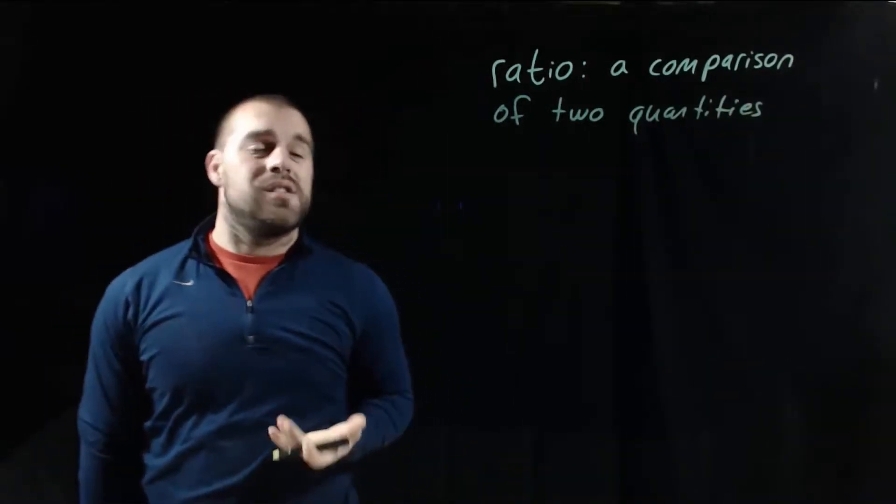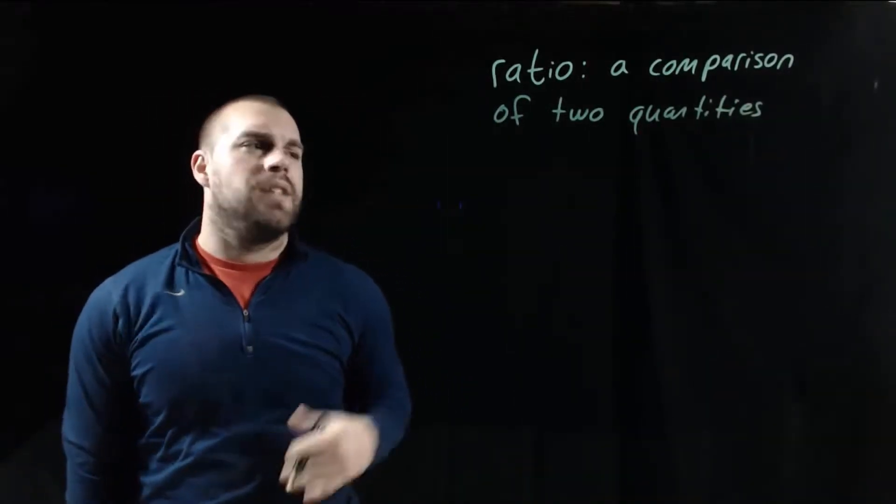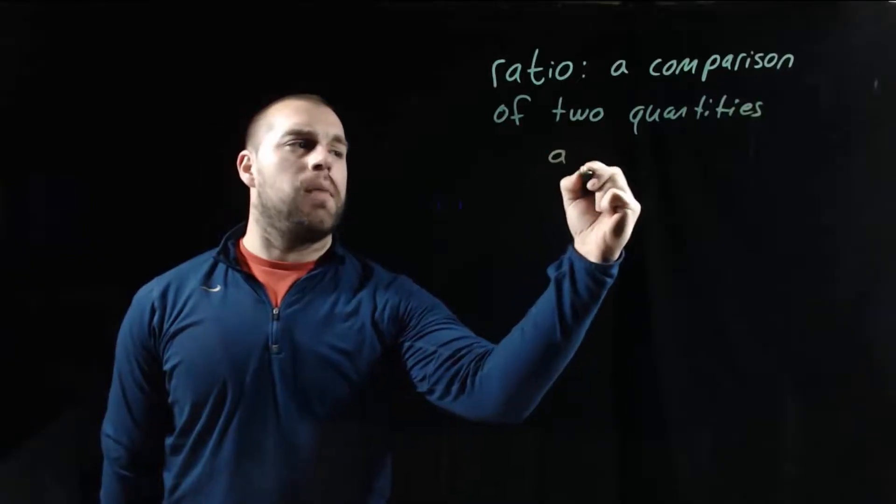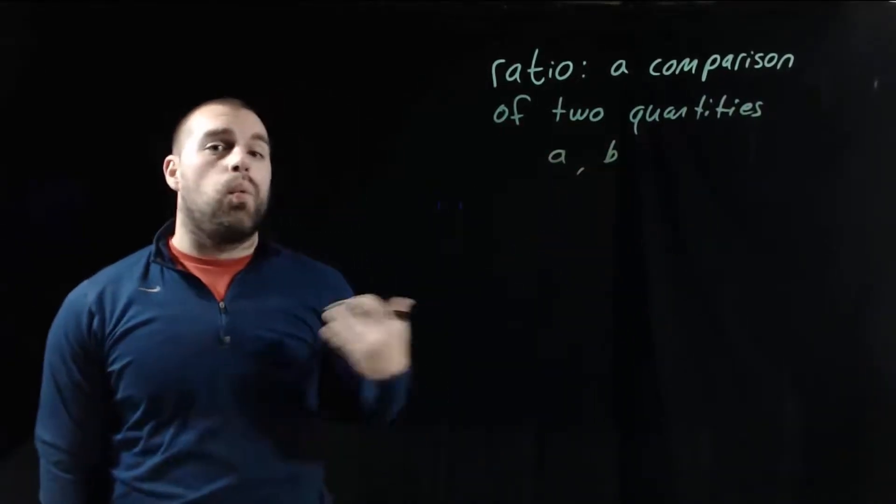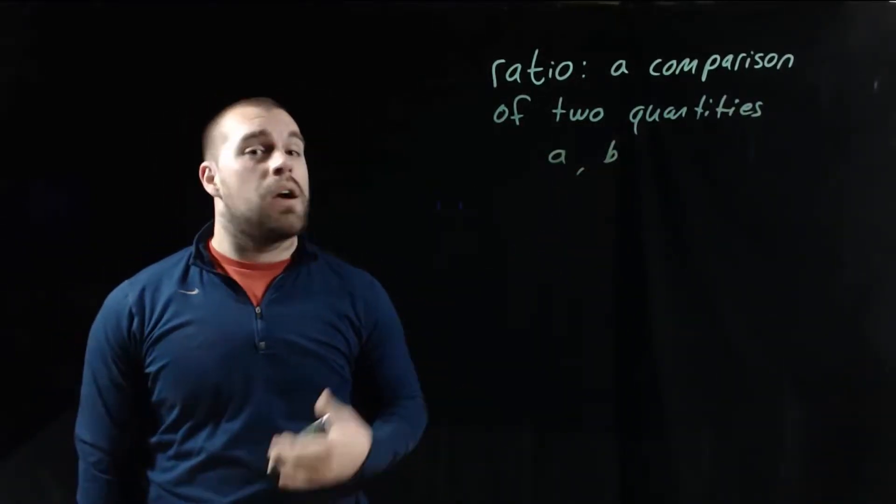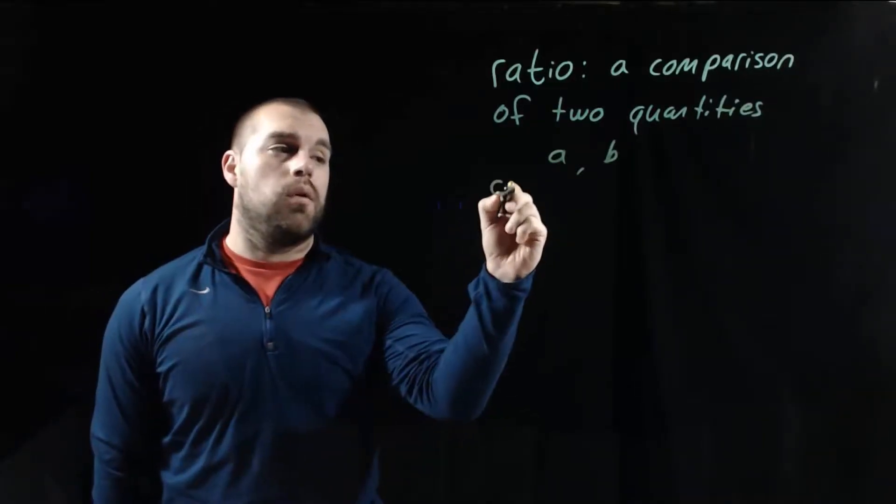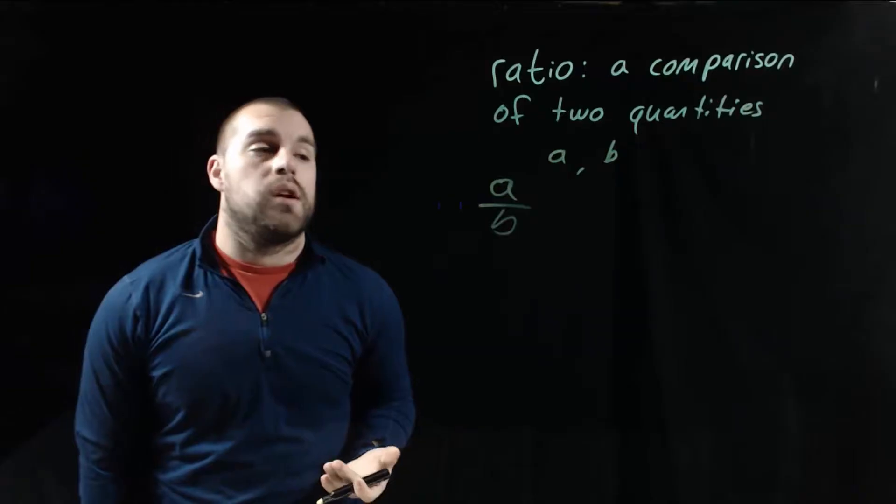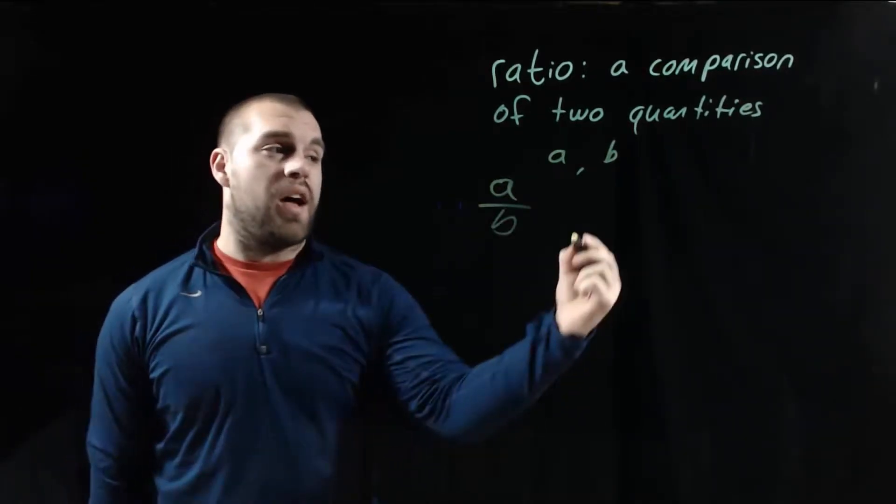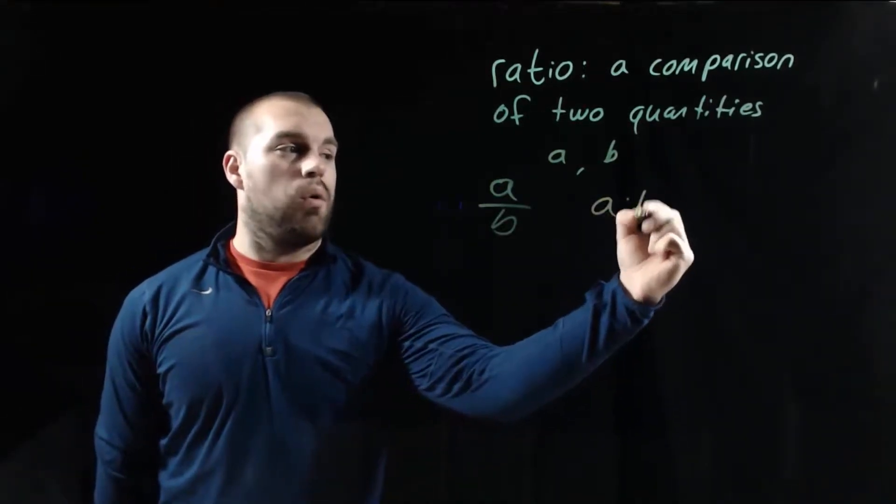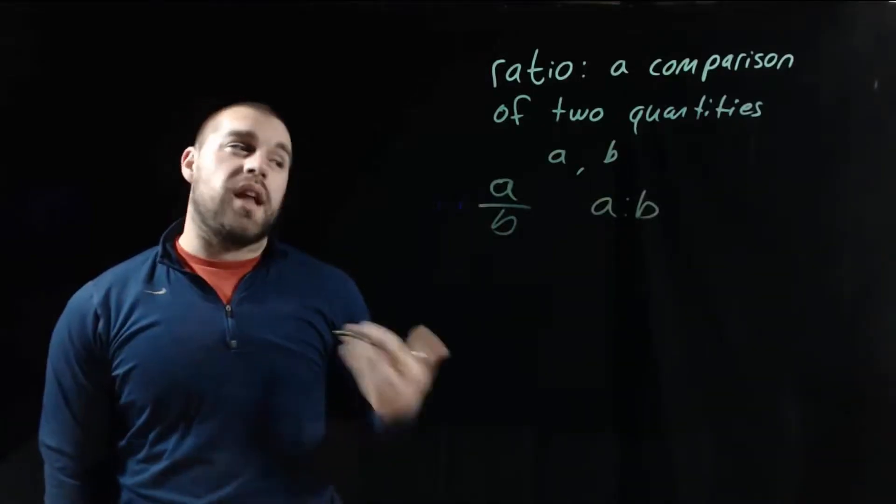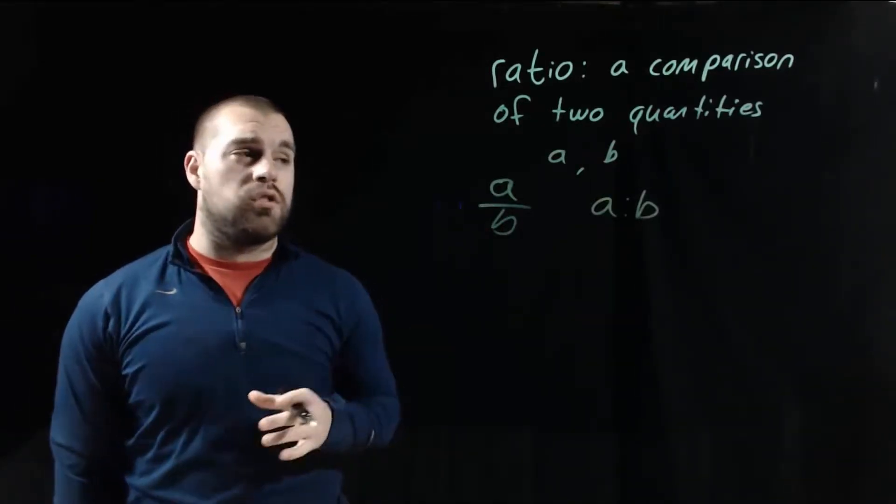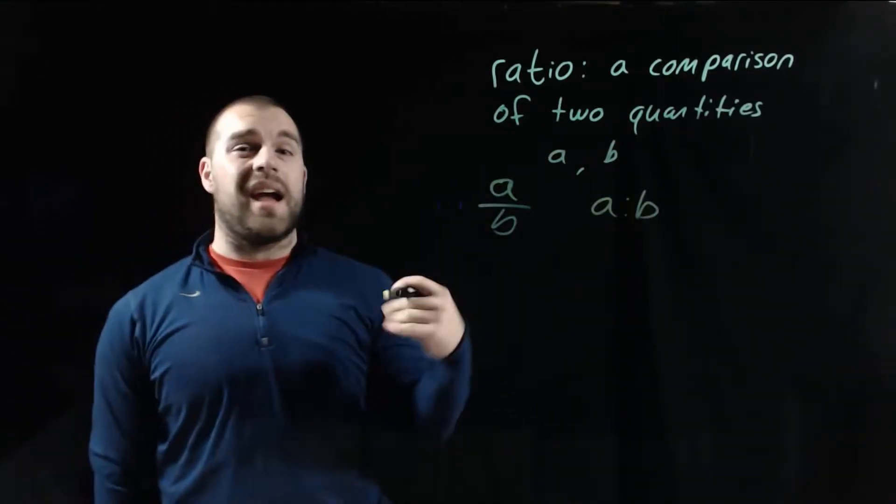There's a few different ways that we can write ratios. Let's say we've got a couple of quantities, A and B. One way we can write a ratio is as a fraction, A over B. Another way is using a colon between those values, A colon B. Or the last way is just using the word to, A to B.